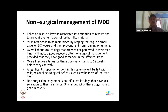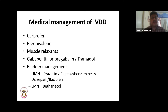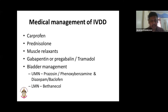Deep pain is the key prognostic indicator — it determines whether to proceed to surgery or conservative management. Medical treatment includes non-steroidal anti-inflammatories like carprofen, a short course of steroids, muscle relaxants like diazepam, and gabapentin, pregabalin, or tramadol. For UMN bladder involvement, prazosin or phenoxybenzamine are used to relax the internal sphincter, while diazepam or baclofen relax the external sphincter. For LMN bladder, bethanechol is used as a detrusor-contracting agent.